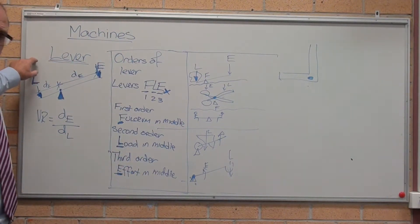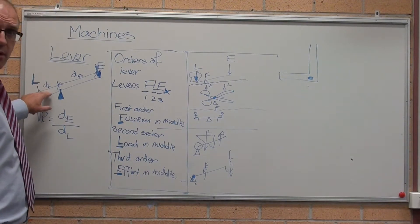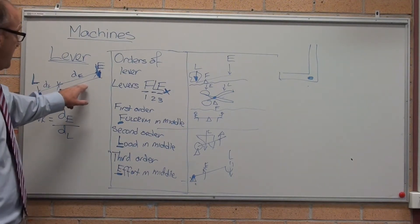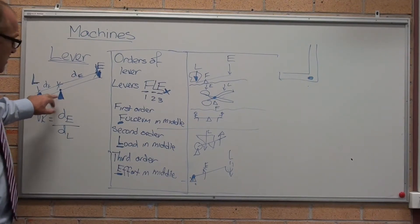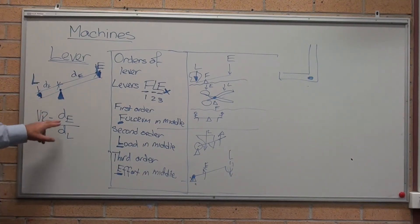Levers, when we're talking levers, we have distance moved by a load, distance moved by an effort, load, effort, and a fulcrum in the middle. The velocity ratio is simply distance moved by the effort divided by distance moved by the load.